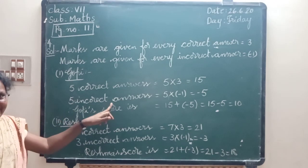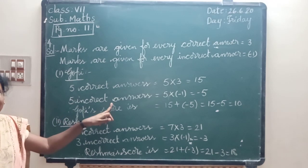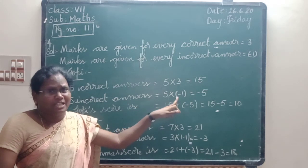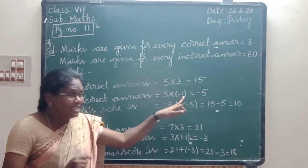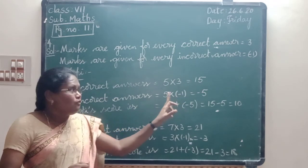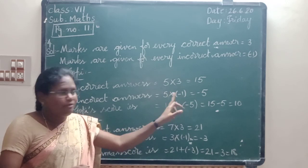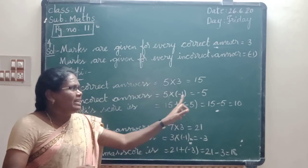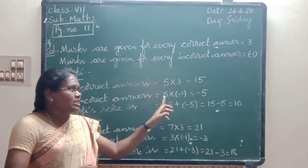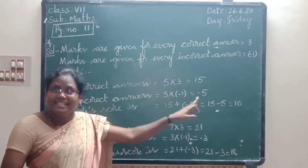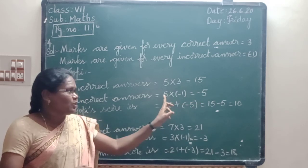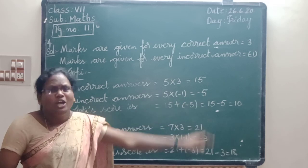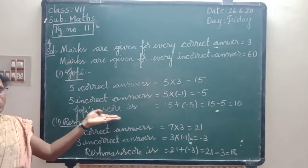He attempted 5 incorrect answers. What is the incorrect answers score? Marks are given for every incorrect answer: minus 1. So 5 into minus 1. Plus into minus is minus. The product of a positive and negative integer is a negative integer. 5 into minus 1 equals minus 5.